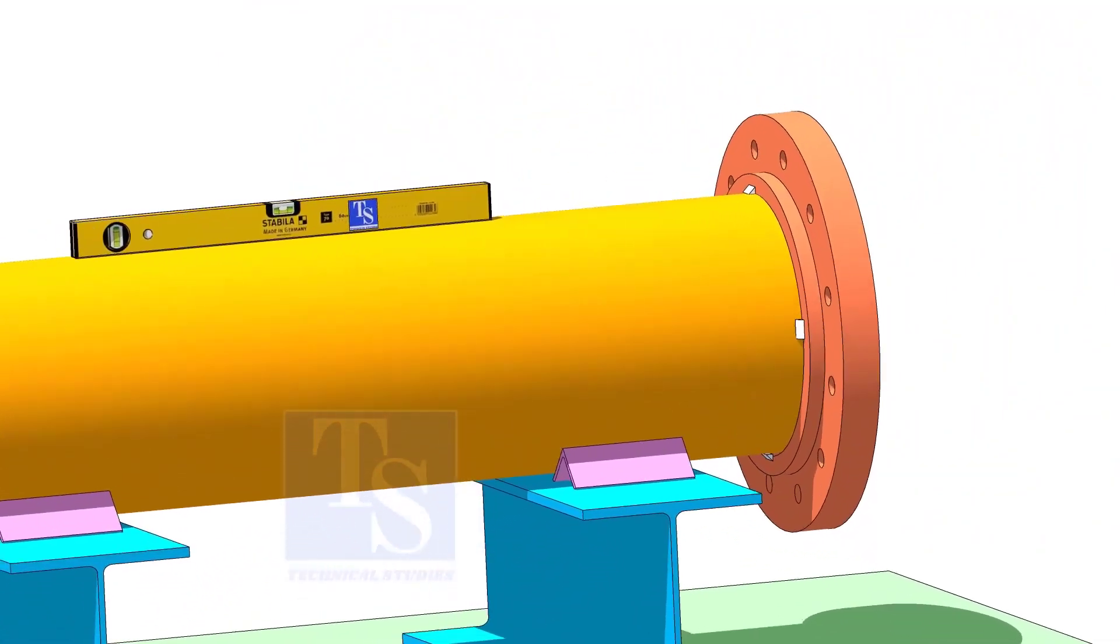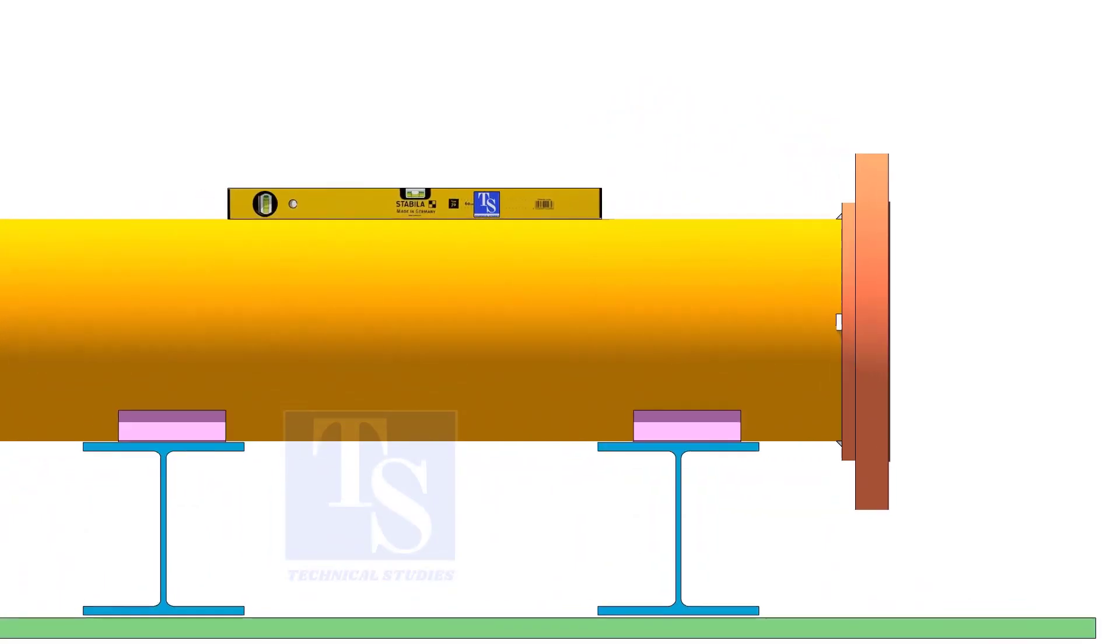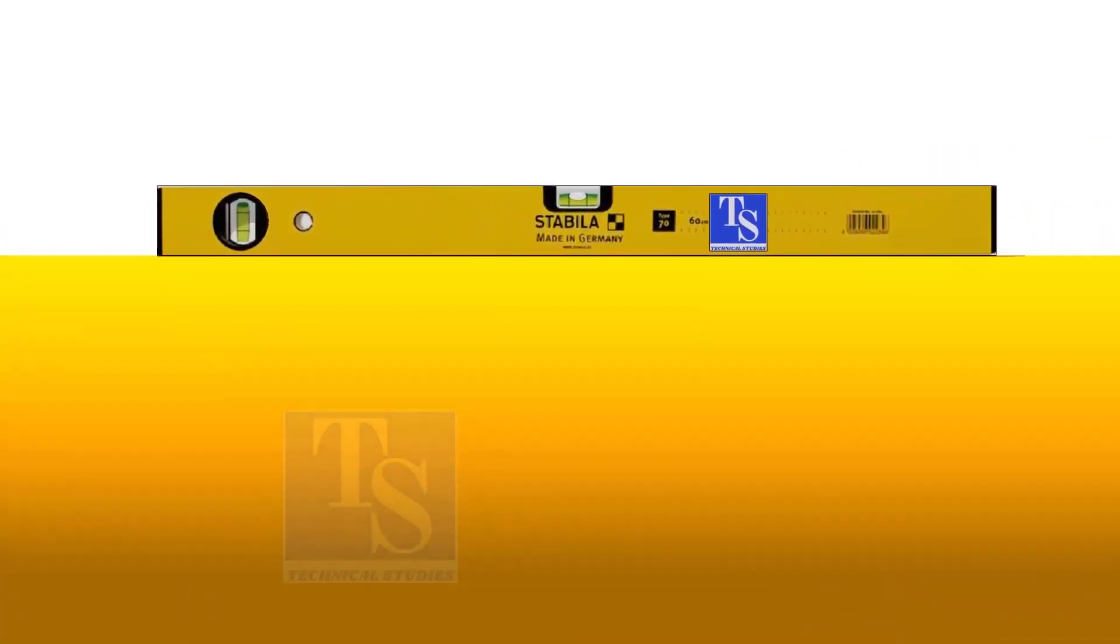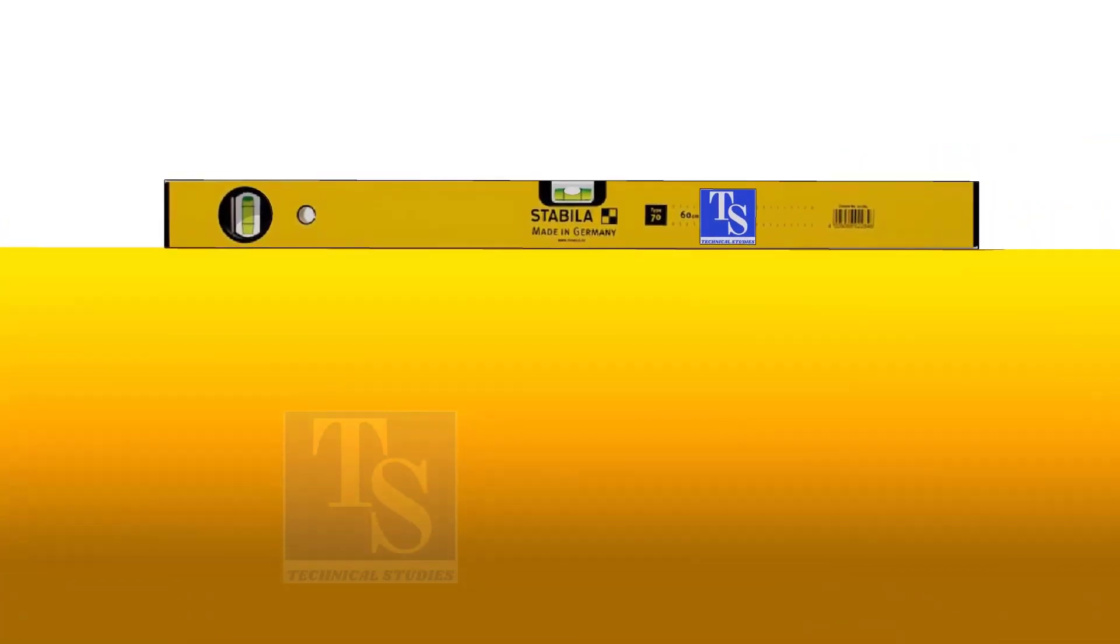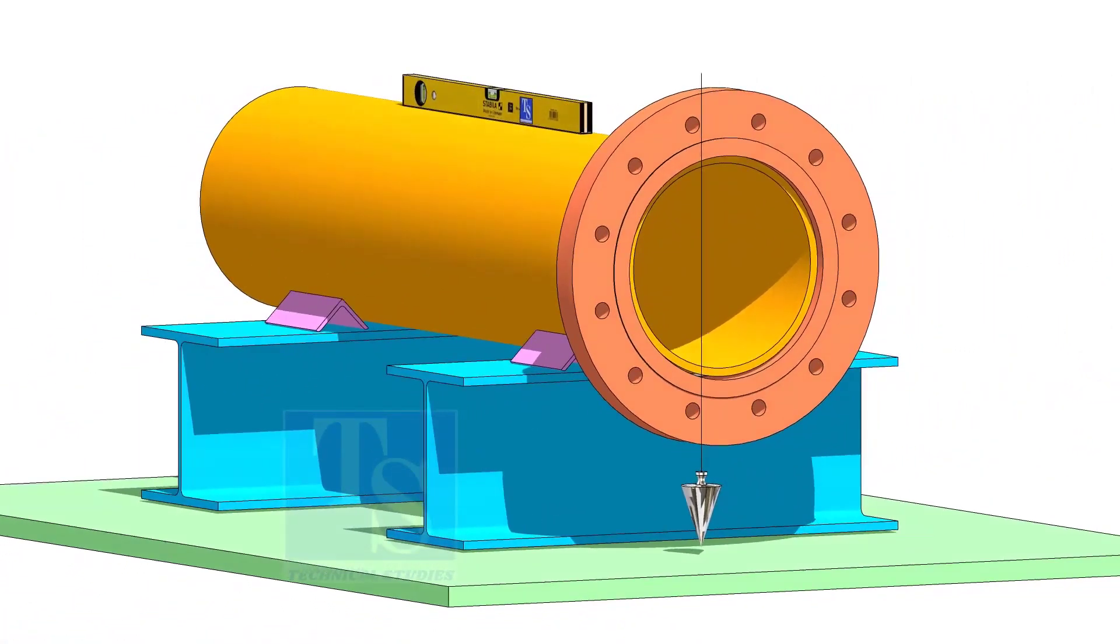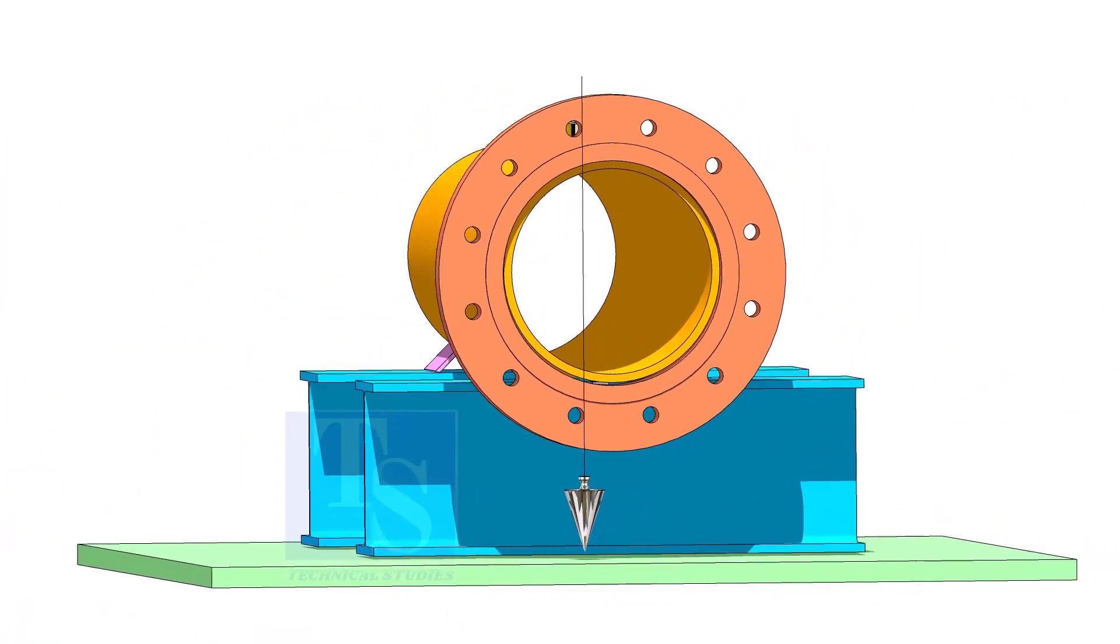After tacking the flange, correct the level of the pipe. Correct the plumbness of the flange and put proper packing on both sides of the pipe.